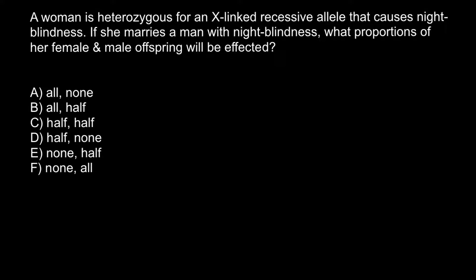Hello and welcome to Nikolai's genetics lessons. Today's problem is: a woman is heterozygous for an X-linked recessive allele that causes night blindness. If she marries a man with night blindness, what proportions of her female and male offspring will be affected?